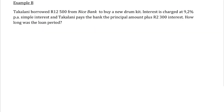Takalani is borrowing 12,500 rand from Nice Bank to buy a drum kit. When we borrow money, that's at the beginning — that's the start of the loan, so this is a principal amount of 12,500. The interest rate is charged at 9.2% simple interest. Takalani pays back the principal amount plus 2,300 rand interest. How long was the loan period?